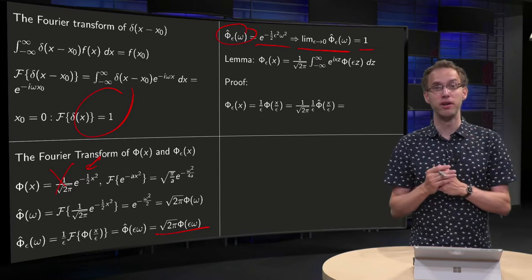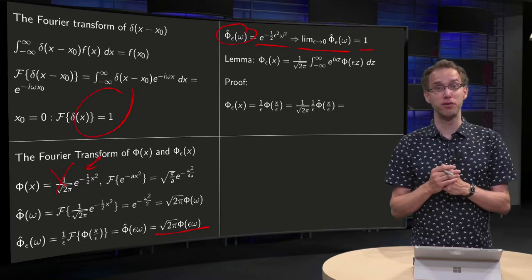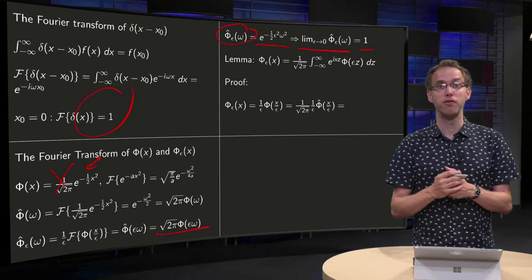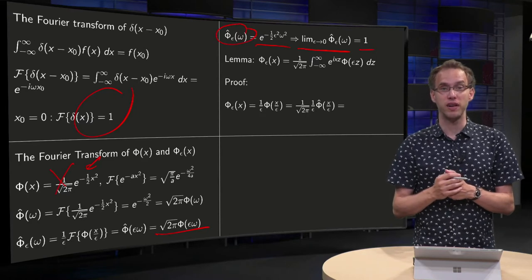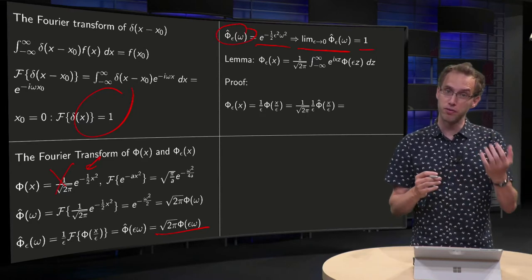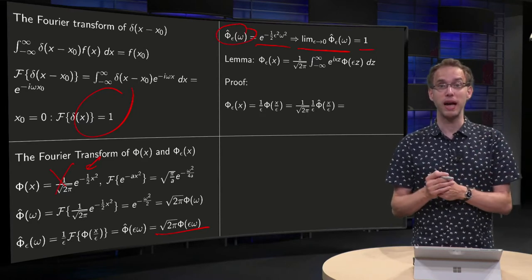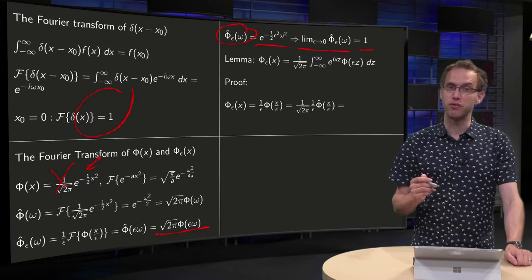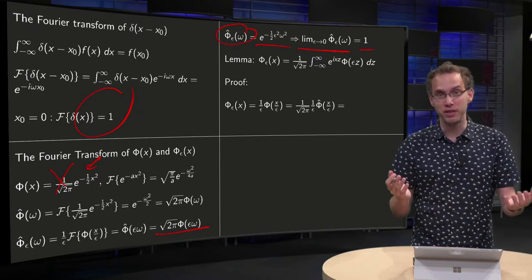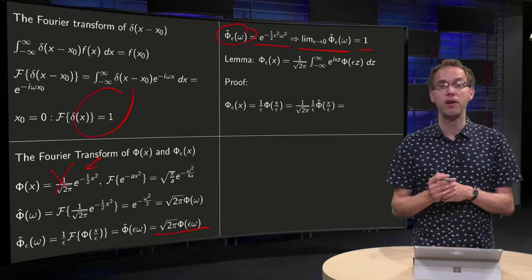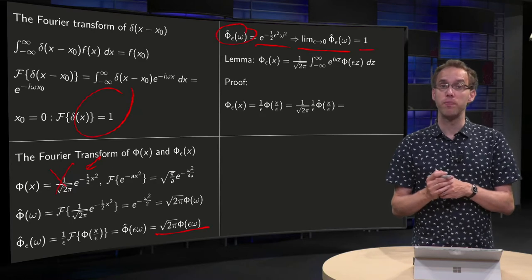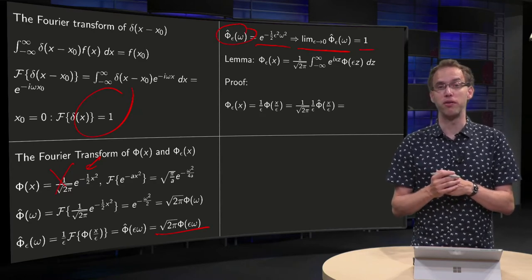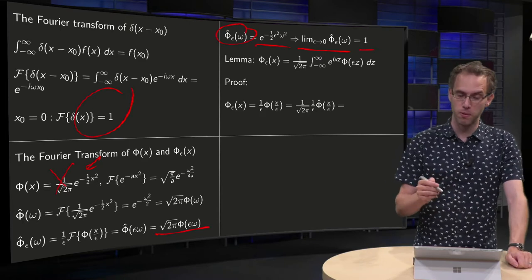Now we know the Fourier transform of the delta function, the Fourier transform of phi of x, and the Fourier transform of phi_epsilon of x. Finally, we use this for a lemma which we will need later on to prove the formula for the inversion of the Fourier transform.